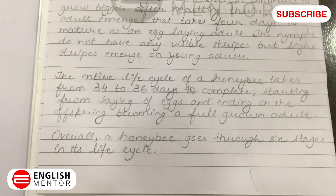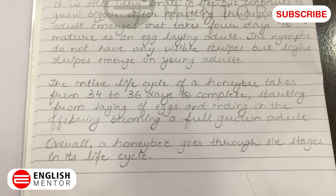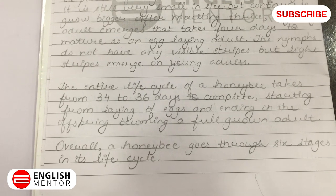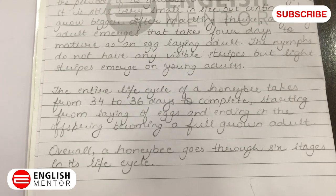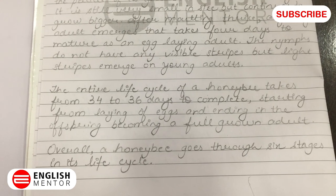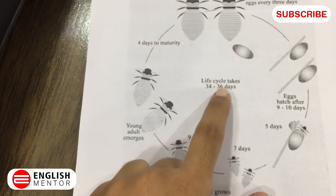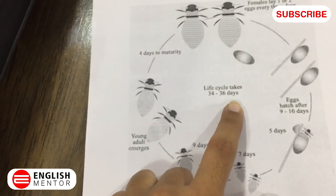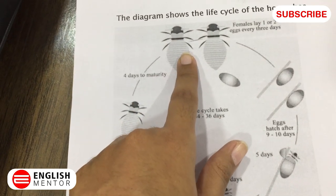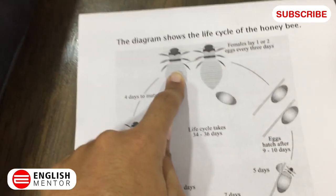Next paragraph: the entire life cycle of a honeybee takes from 34 to 36 days to complete, starting from the laying of eggs and ending in the offspring becoming a full-grown adult. We have been given that the life cycle takes 34 to 36 days to complete, starting from when it lays eggs and ending at the same point.